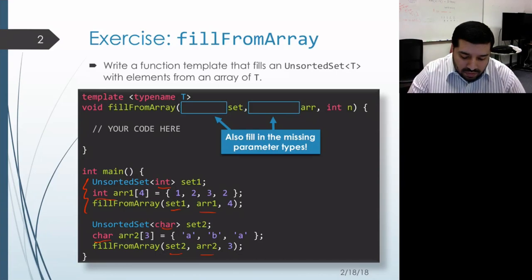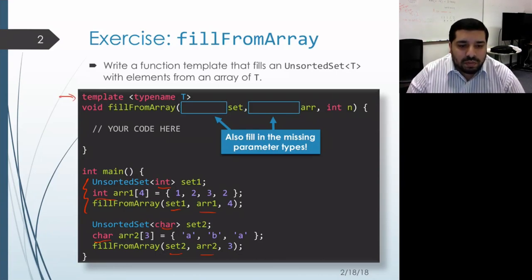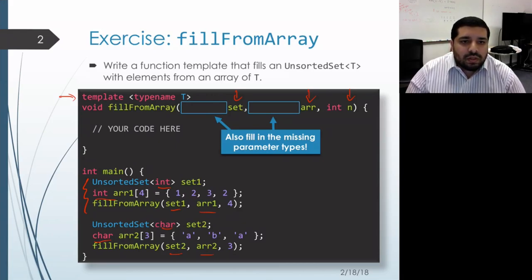What we already have here in terms of the function itself is that we have the template header - that's going to be the element type. There's going to be a set parameter, an array parameter, and an integer parameter that tells us the number of elements in that array. I'll pause for a few seconds to give you a chance to pause the video and work on it, and then we'll talk about it together.